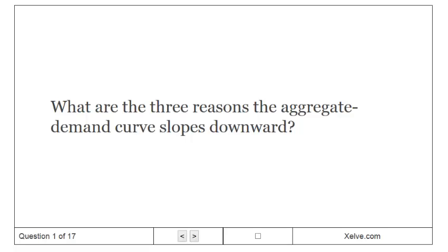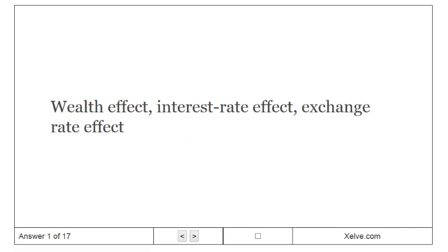What are the three reasons the aggregate demand curve slopes downward? Wealth effect, interest rate effect, exchange rate effect.